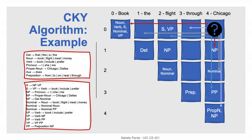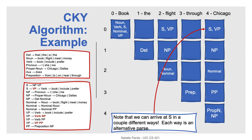At long last, for the full constituent 'book the flight through Chicago,' we're looking for a noun, verb, sentence, nominal, or verb phrase followed by a noun phrase, or a sentence or verb phrase followed by a prepositional phrase. We find two matches — a sentence or a verb phrase — and since we already know that a verb phrase can directly map to a sentence, that means we reach the sentence node in two different ways. So we could return two different grammatically correct parses for the sentence.